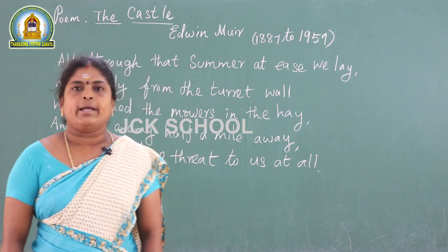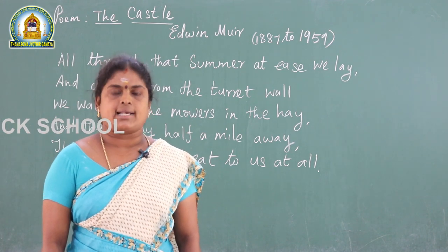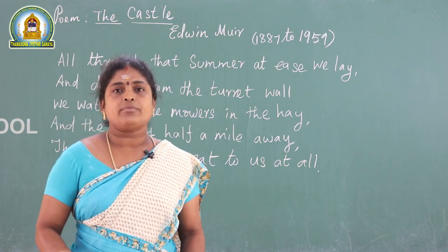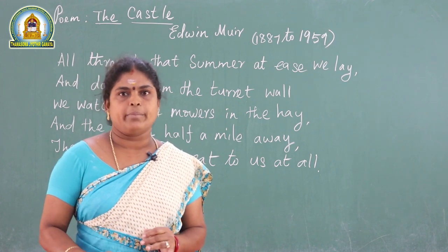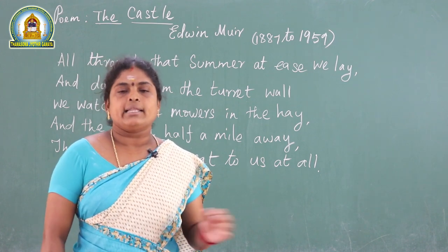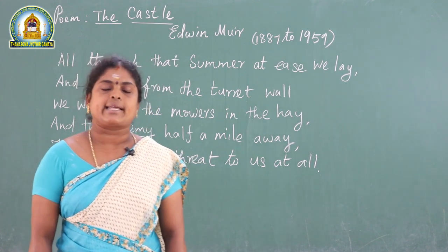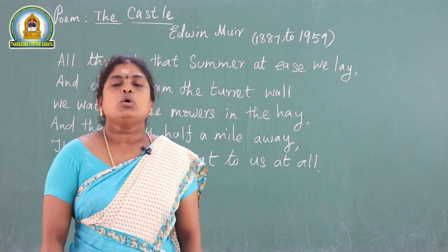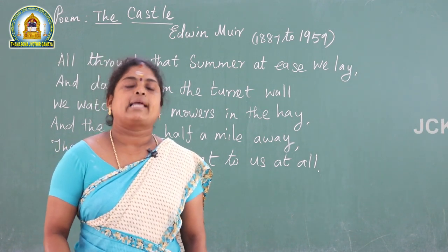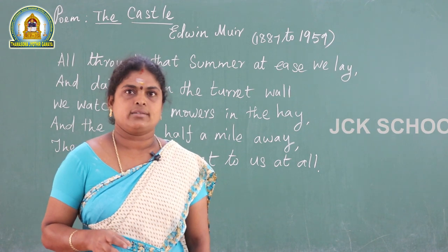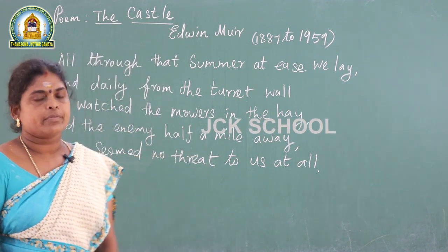In the poem, the poet describes the fall of a castle. The main reason for the fall of the castle is gold, not a human being. In the poem, the poet is a soldier in a castle who describes how the castle is captured by soldiers. Now, we go through the poem.